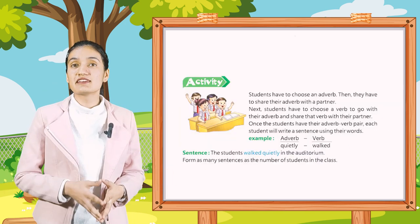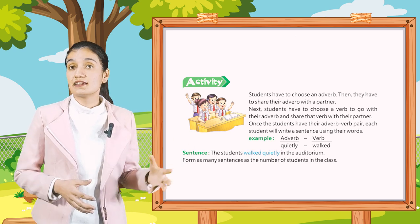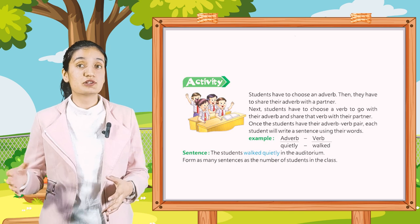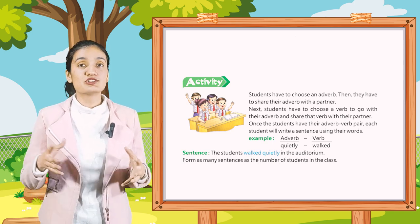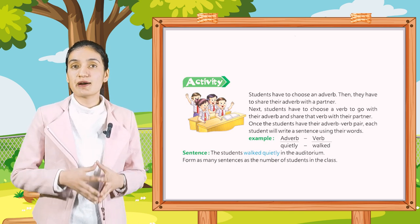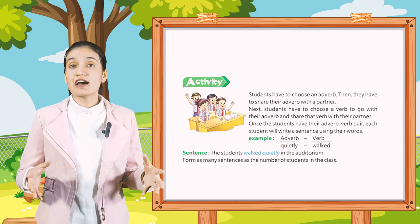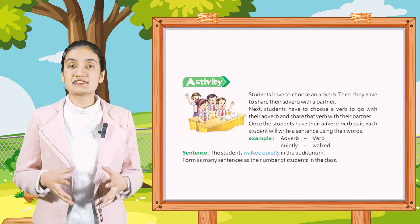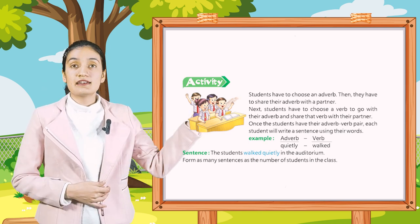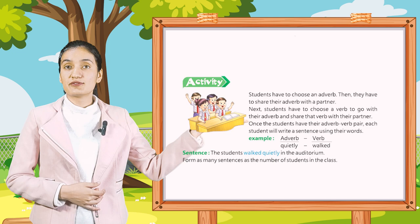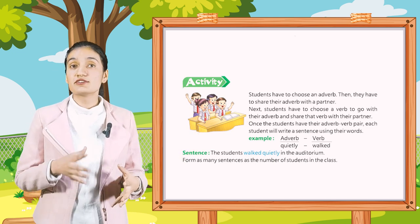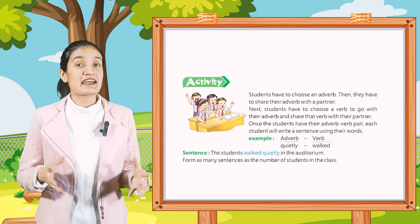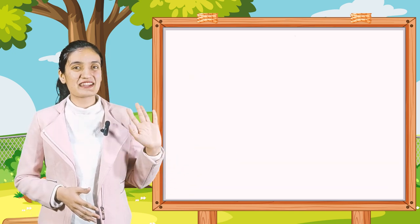Now let's do the activity. Students choose an adverb and share it with a partner. Next, choose a verb to go with the adverb and share that verb with the partner. Once each student has an adverb-verb pair, write a sentence using those words. For example: adverb 'quietly' + verb 'walk' → sentence: 'The students walk quietly in the auditorium.' Form as many sentences as the number of students in the class. Thank you class, bye bye!